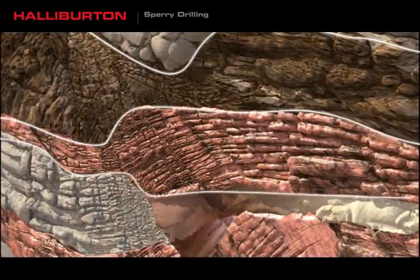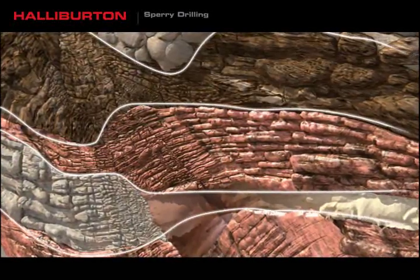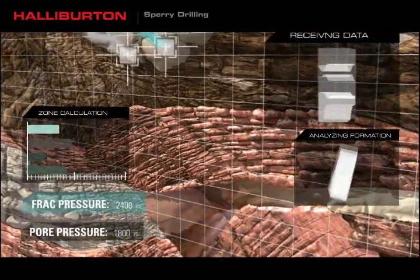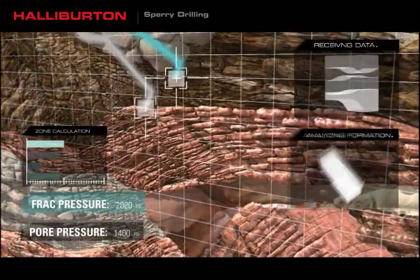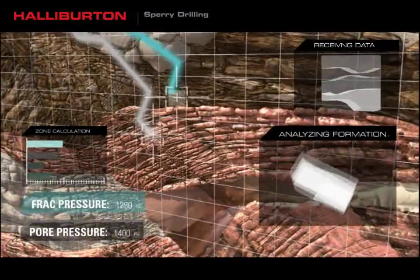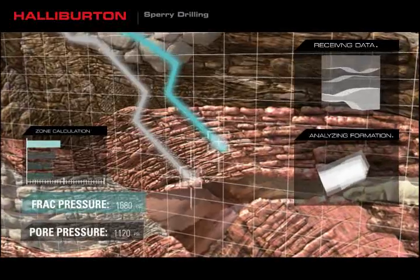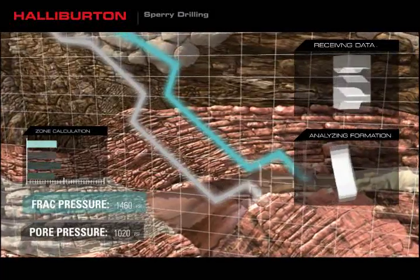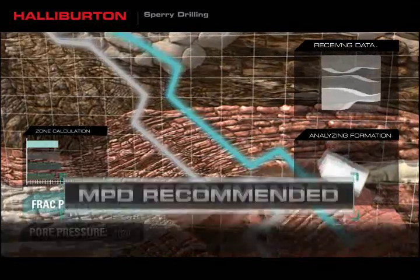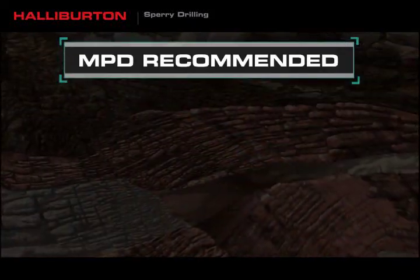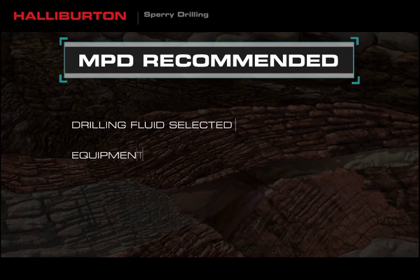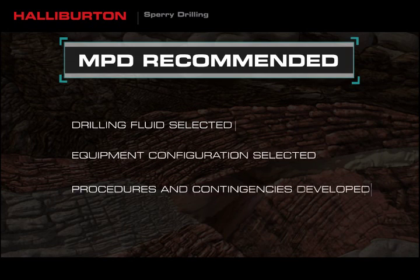Following the model-measure-optimize process, every managed pressure drilling project at Halliburton starts with candidate well selection. We use detailed hydraulic models to assess the operational pressure window and the possibility of drilling with managed pressure. Pre-job modeling helps us choose the appropriate drilling fluids, select equipment configuration, and develop project procedures and contingencies.